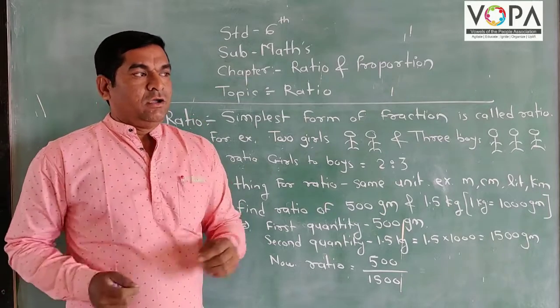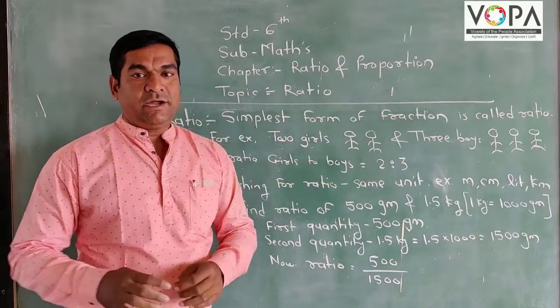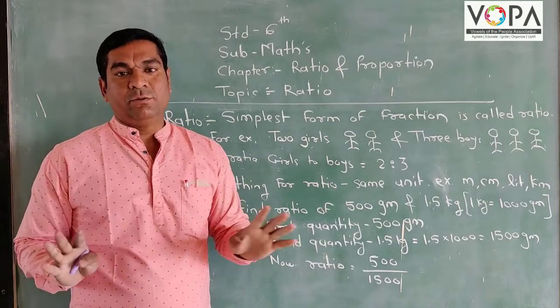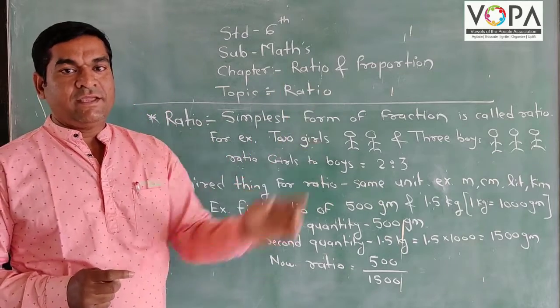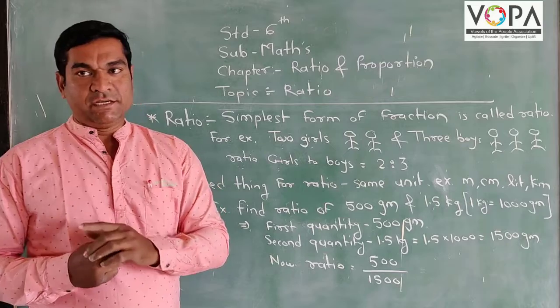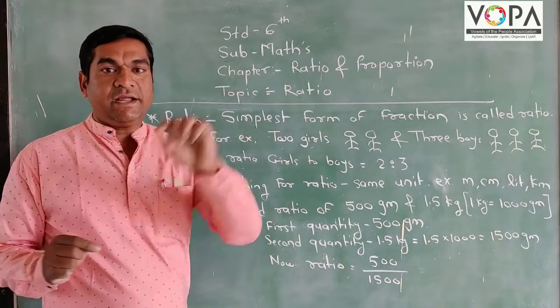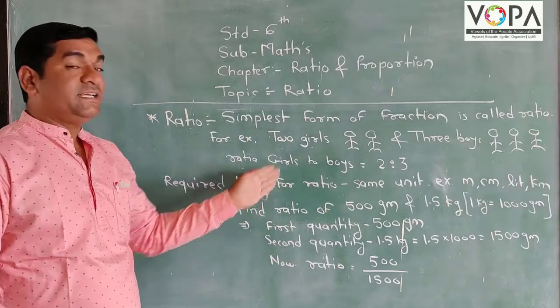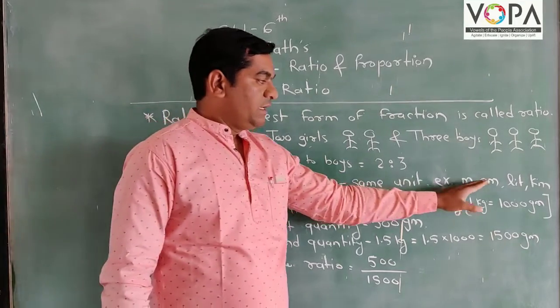We cannot compare things like 5 liters of milk and 10 kilometers distance. It is not comparable because the unit of milk is liter and the unit of the road is kilometer. Kilometer and liter are not the same unit. For ratio, we require the same units, like meter, centimeter, liter, or kilometer.